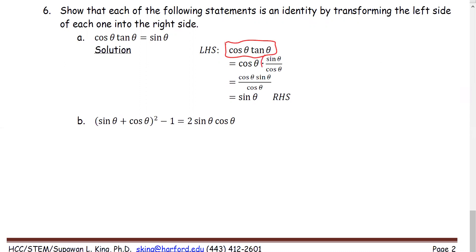The tangent theta is equivalent to sine theta over cosine theta. After we substitute tangent by sine over cosine, we can see cosine and cosine can be reduced, and it gives us the same expression as the right-hand side: sine theta.